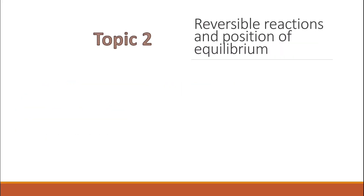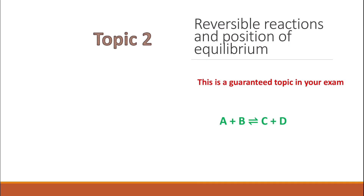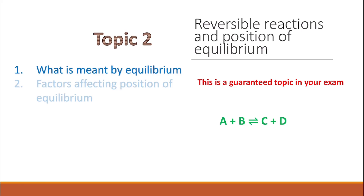Topic two is reversible reactions and position of equilibrium — again, a guaranteed topic in your exam. In a reversible reaction, reactants react to give products, and then products react again to give back reactants. You need to know what equilibrium means and how it is reached. Remember that at equilibrium, the rate of the forward reaction equals the rate of the reverse reaction, and the concentrations of all reactants and products remain constant — not the same, but constant.